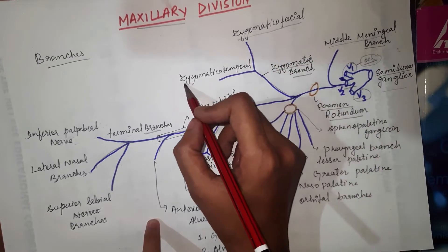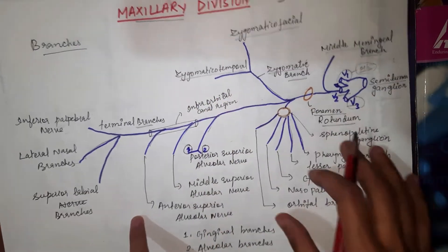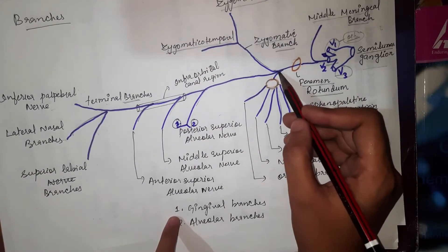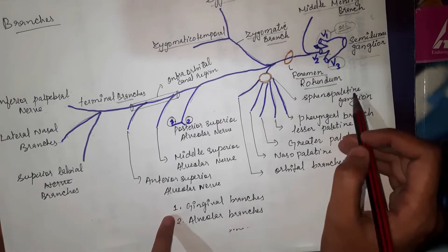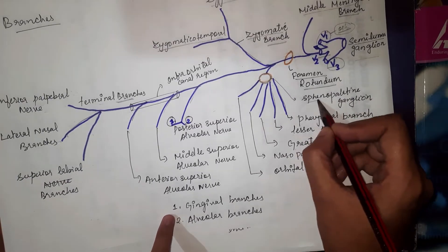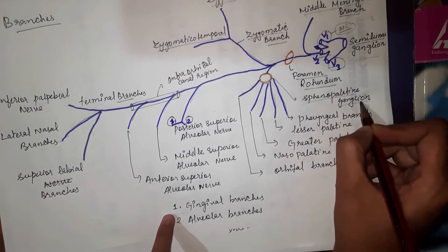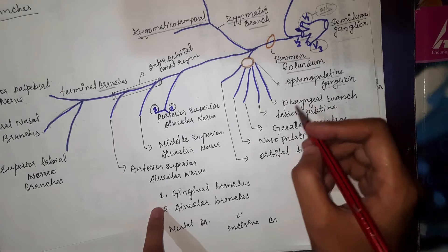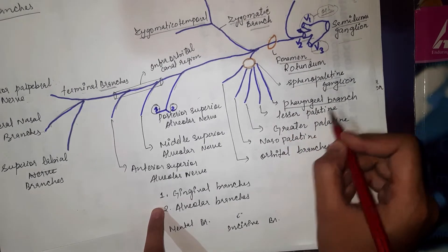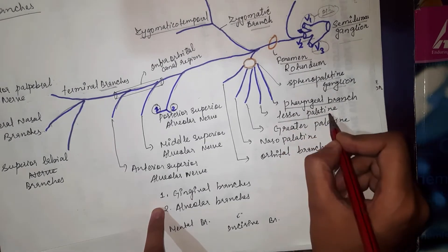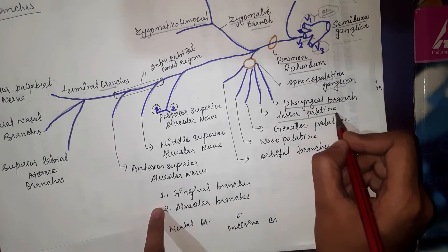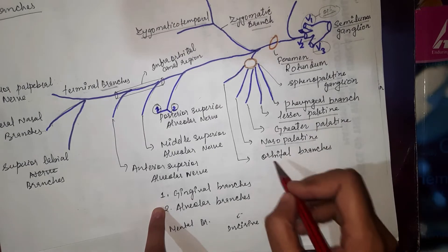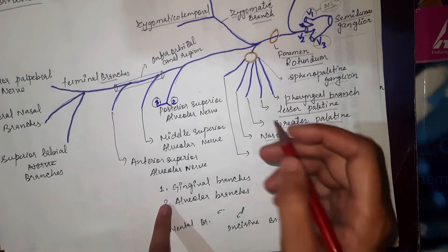the second is called the zygomaticotemporal branch. The nerve then passes through the sphenopalatine ganglion and gives off branches: the pharyngeal branch, the lesser palatine branch, the greater palatine branch, the nasopalatine branch, and the orbital branch.